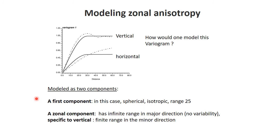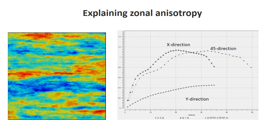The first component would be the regular spherical part with range 25. The second one will have essentially infinite range in the major direction, which has no variability at all. Specifically, you want to add a variogram with an infinite range in that direction.